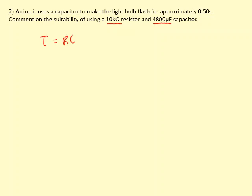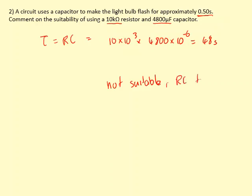So in this case if we work out the RC we get 48 seconds, which is much longer than the 0.5 seconds that they're trying to achieve in this circuit. So these components are not suitable for this circuit. They need to use capacitors and resistors with lower values, so you can say RC is too large.